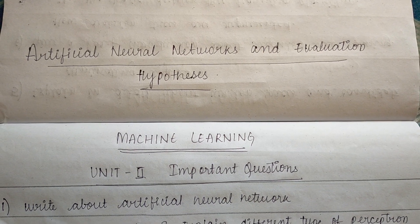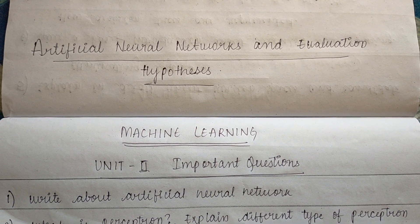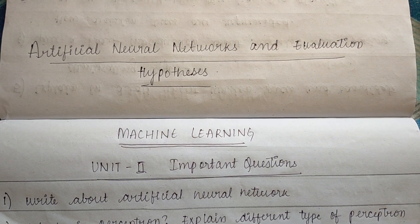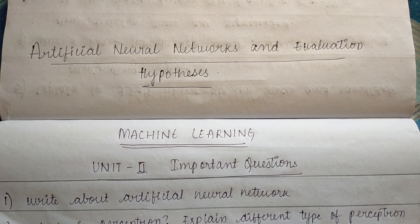Hello everyone. So let's see what is Unit 2 important questions. Unit 2 name is Artificial Neural Networks and Evaluation Hypothesis. Artificial neural networks can also be called as ANN.